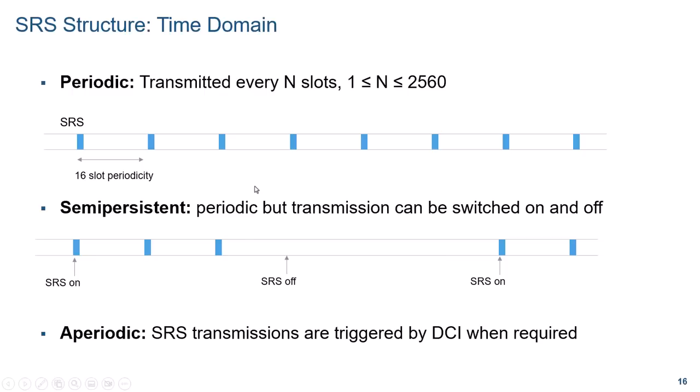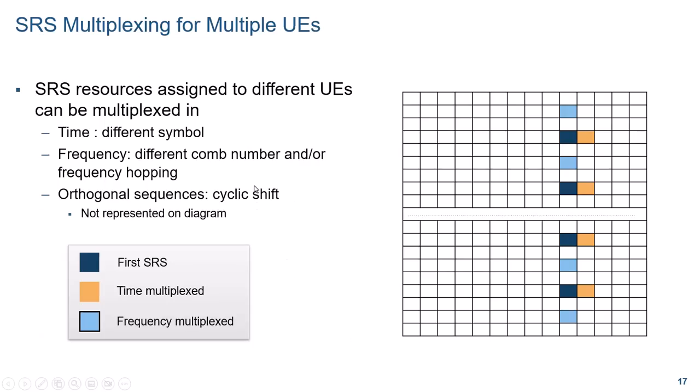When considering SRS, it is important to realize that multiple UEs can transmit SRS in the same slot. SRS transmissions from different UEs can be separated by time, meaning a different OFDM symbol, frequency, meaning a different comb, and/or cyclic shift of the underlying sequence. In the latter case, the two SRS overlap in time and frequency, but are still orthogonal because of the cyclic shift.